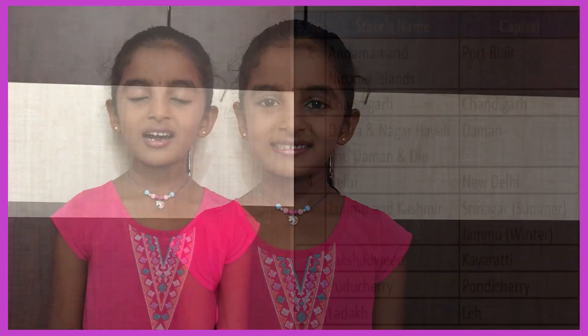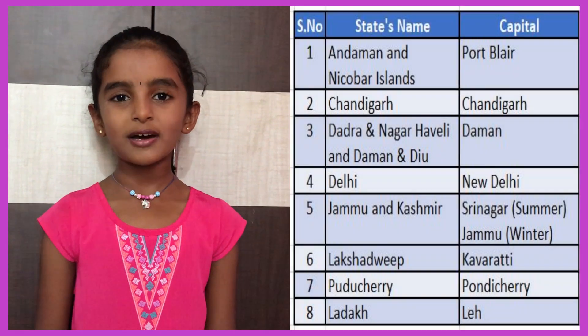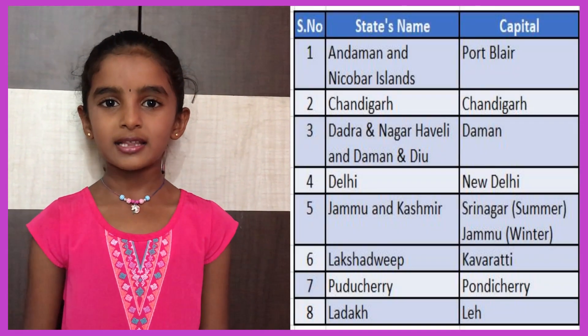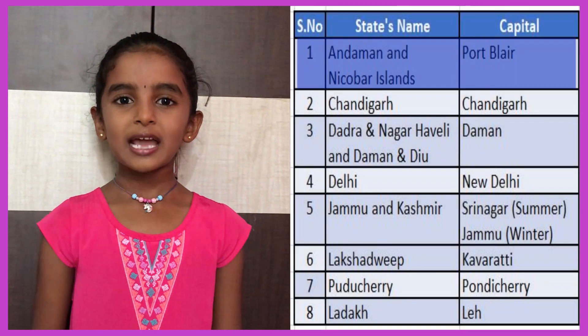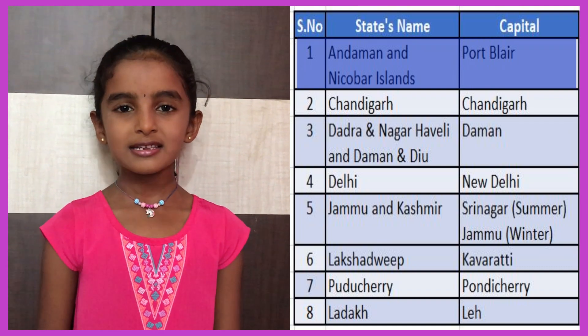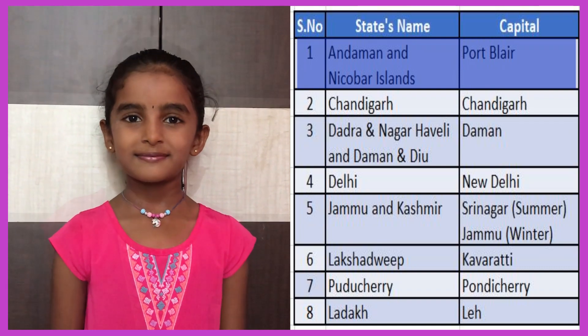In this video we are going to learn about the union territories and their capitals. Andaman and Nicobar Islands are located in the Bay of Bengal. The capital of Andaman and Nicobar Islands is Port Blair.